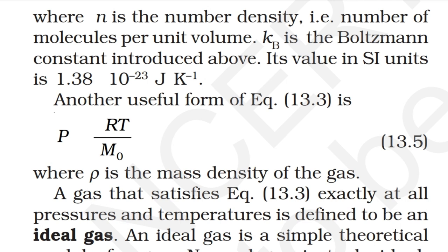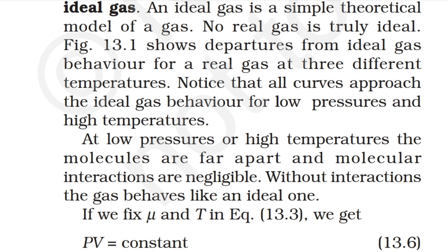The value of kB in SI units is 1.38 × 10⁻²³ joules per kelvin. A gas that satisfies the ideal gas equation exactly at all pressures and temperatures is defined to be an ideal gas. An ideal gas is a simple theoretical model — no real gas is truly ideal. Figure 13.1 shows departures from ideal gas behavior for a real gas at three different temperatures. All curves approach ideal gas behavior for low pressures and high temperatures, where molecules are far apart and molecular interactions are negligible.